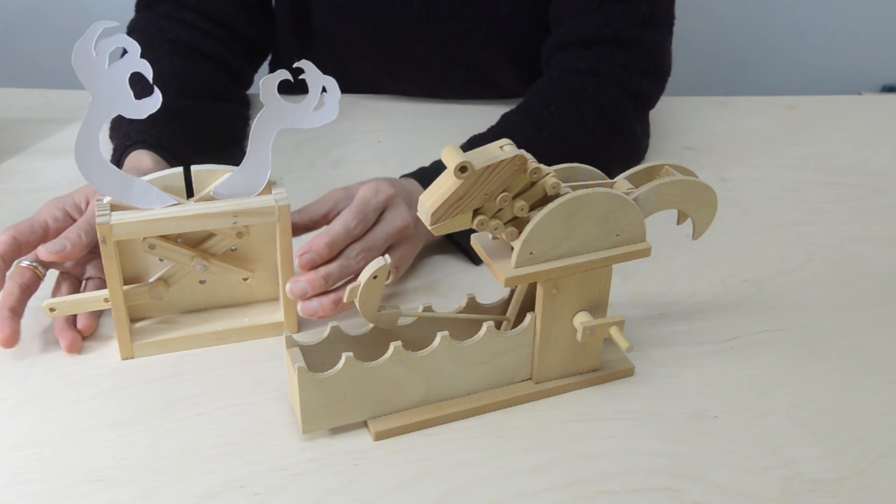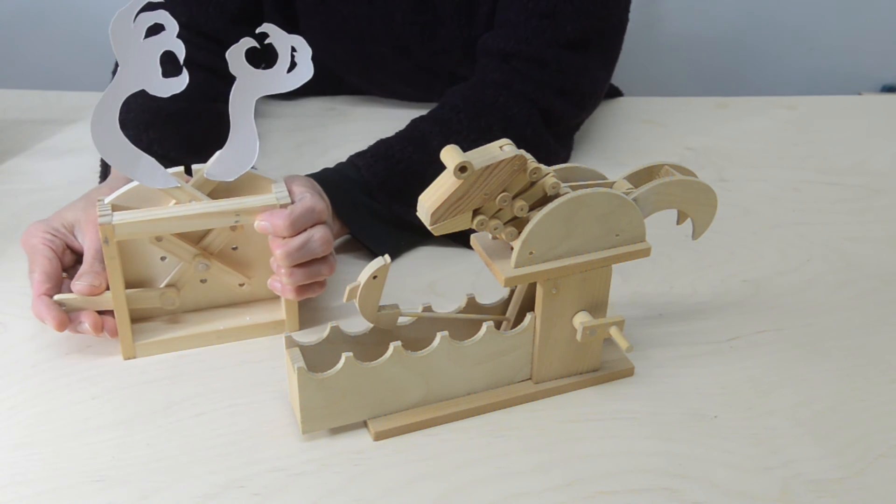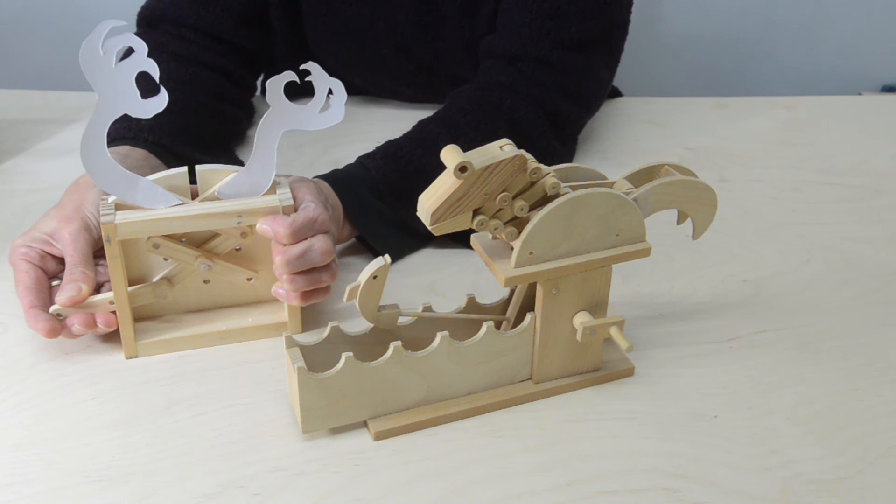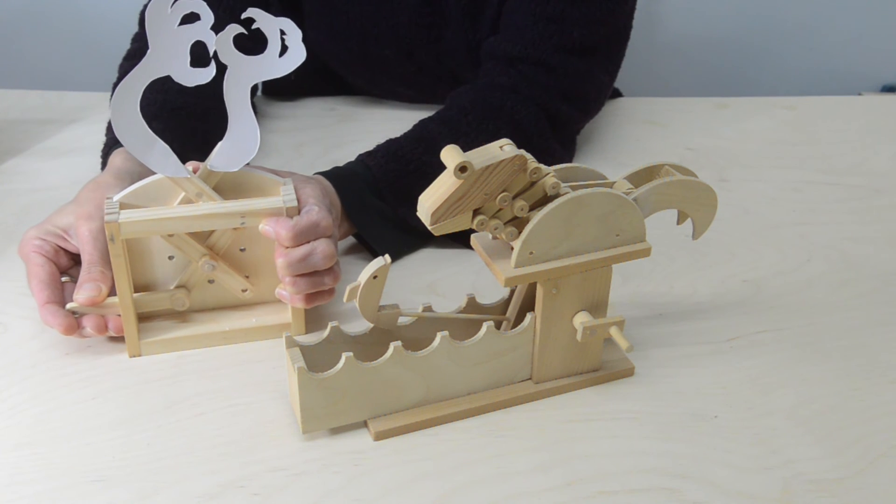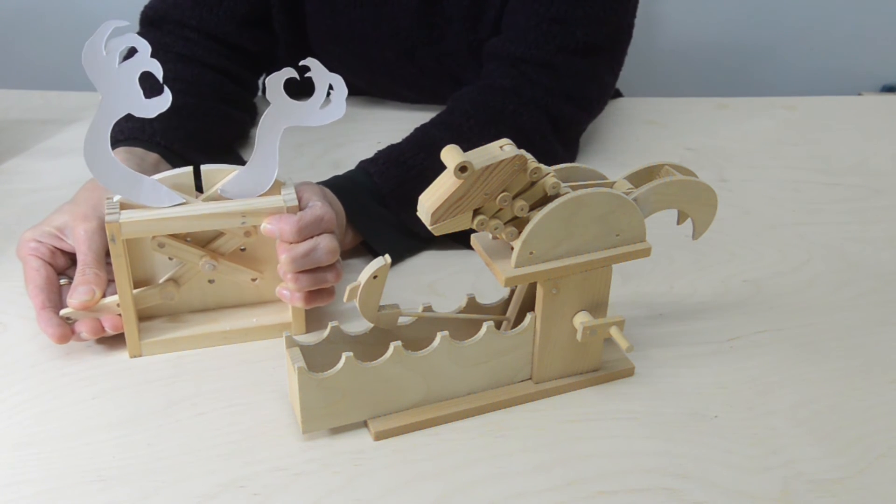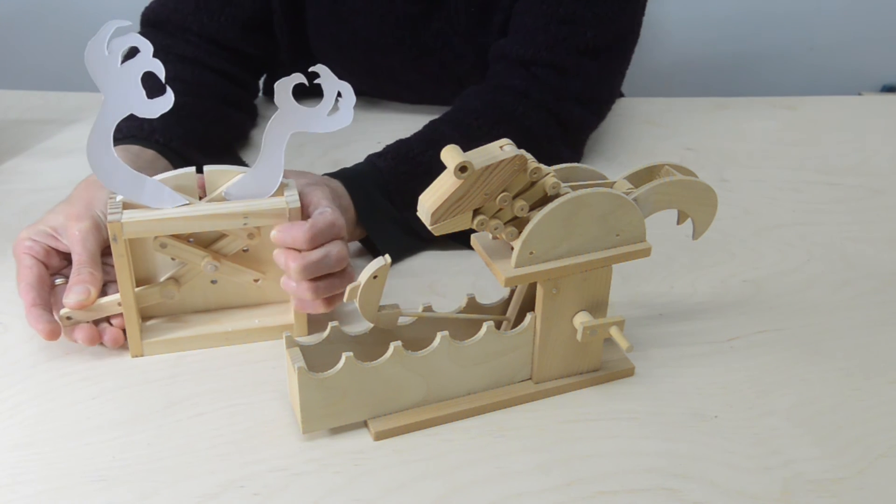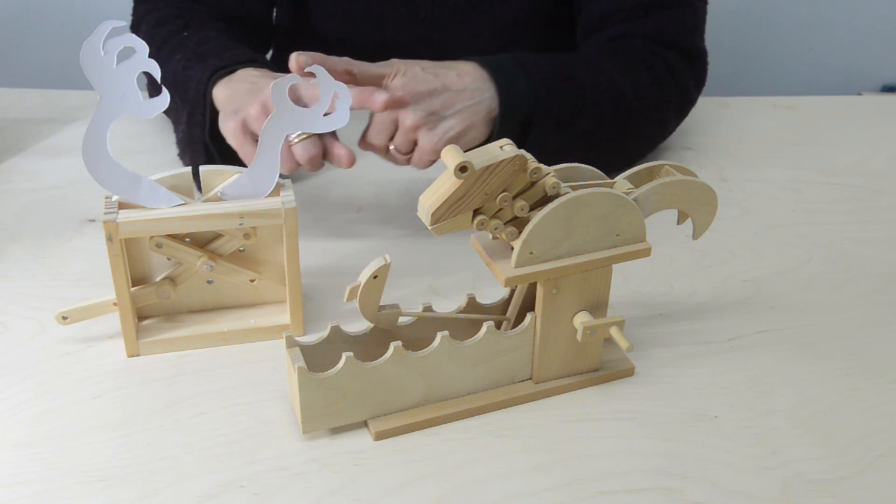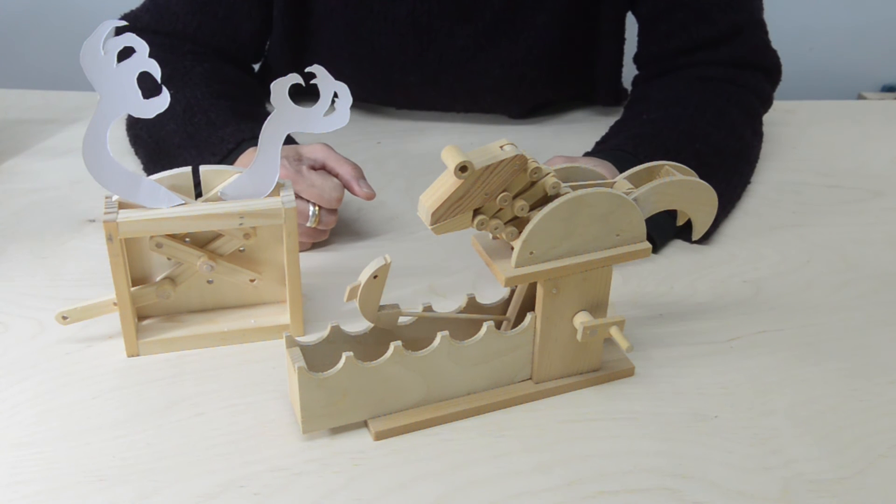These linkages are a more complex arrangement of our very simple little model here, which is just grabbing with its horrible nasty hands and claws. So this is called a scissor linkage because it works by two linkages going across each other.